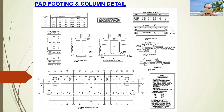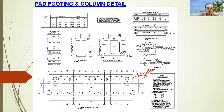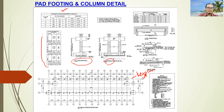This is an example drawing of pad footing and column details. You can see the drawing layout — we can call it the key plan. You can also see the typical pad footing detail: this is for single footing and this one is for combined footing. This one is the schedule of reinforcement for pad footing, and this one is the column schedule.